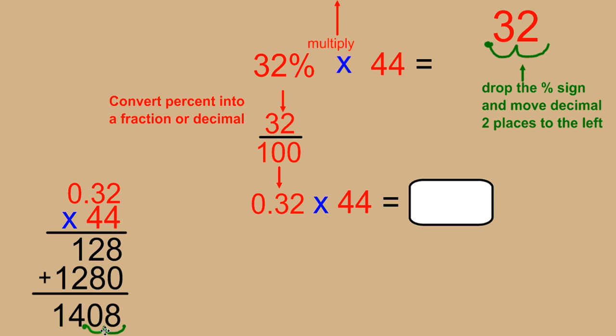We need to move the decimal two places to the left. Now, some of you are probably wondering why. Well, if you see two decimal places in one of your factors and zero decimal places in the other, the rules for multiplying a decimal by a whole number are to count those decimal places. And then, we find the sum of that, which is 2. And that tells us to move the decimal two places to the left.